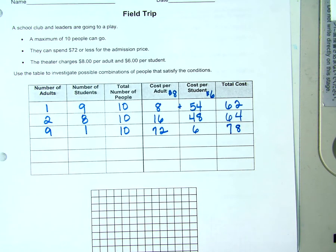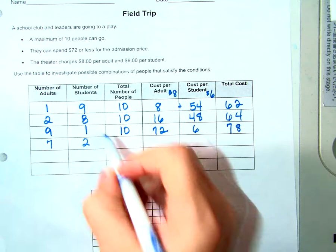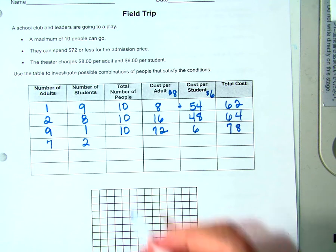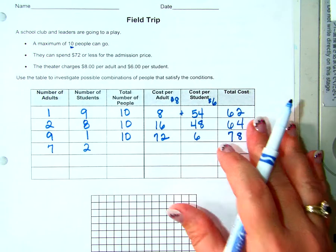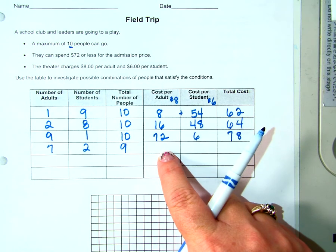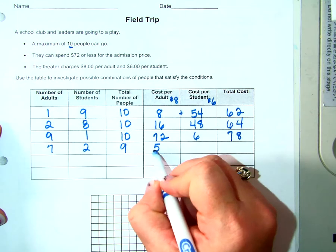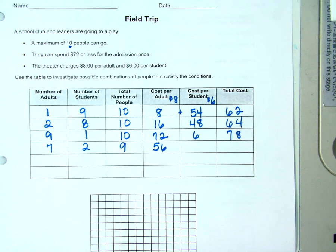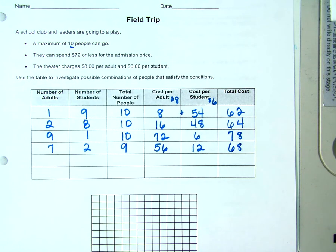Not only should we not send nine adults with one student, we can't, according to these parameters. How many adults are going? Seven adults are going and taking how many students? Two students. How many people are going? Is that even allowed? It says ten people have to go. Oh, a maximum. So can nine people go? How much is it going to cost for the adults? Seven times eight. Fifty-six. How much is it going to cost for the two students? Twelve. For a total of? Sixty-eight. Does that work?